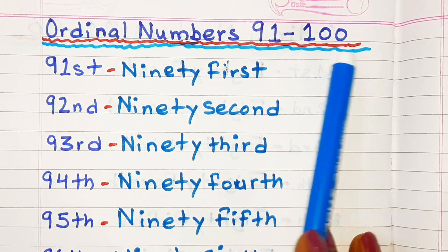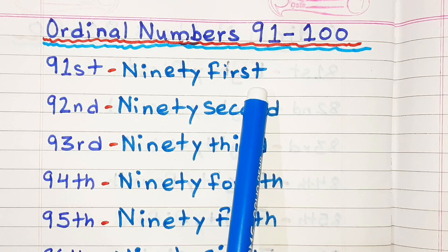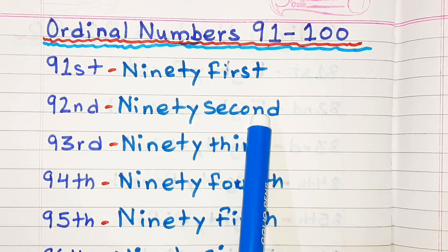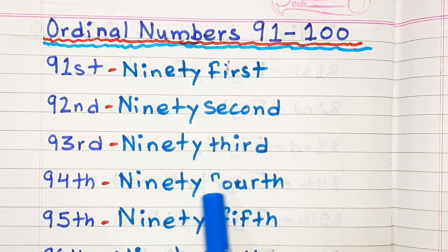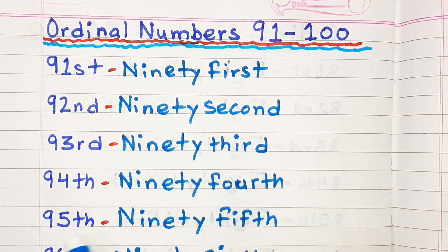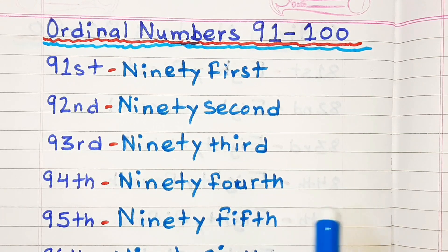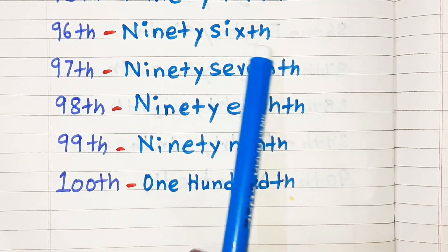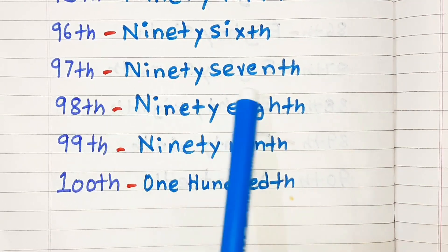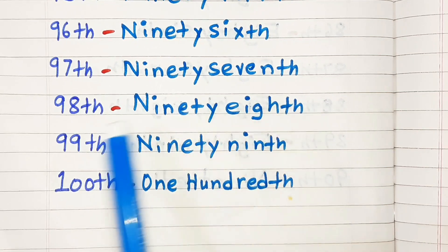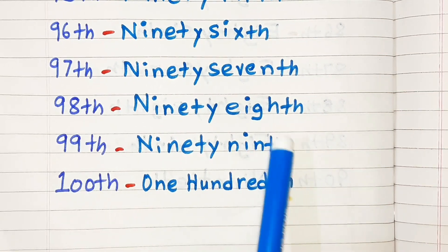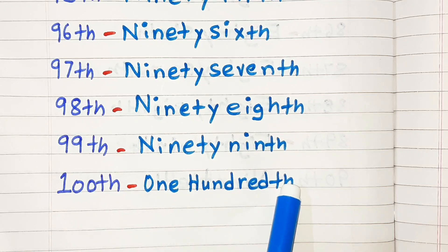Ordinal Numbers Ninety-one to One-hundred: Ninety-first, Ninety-second, Ninety-third, Ninety-fourth, Ninety-fifth, Ninety-sixth, Ninety-seventh, Ninety-eighth, Ninety-ninth, One-hundredth.